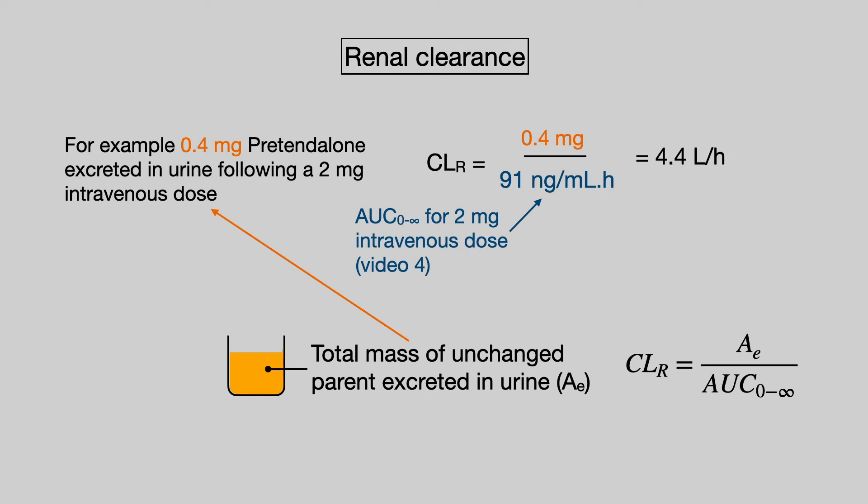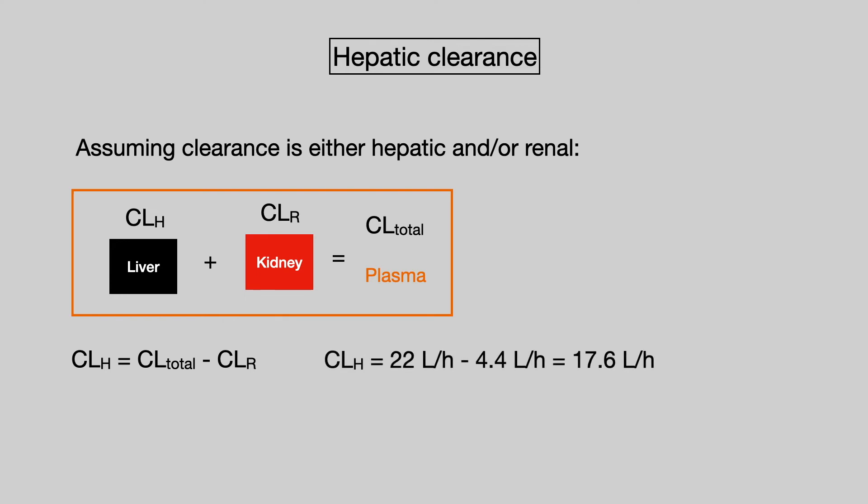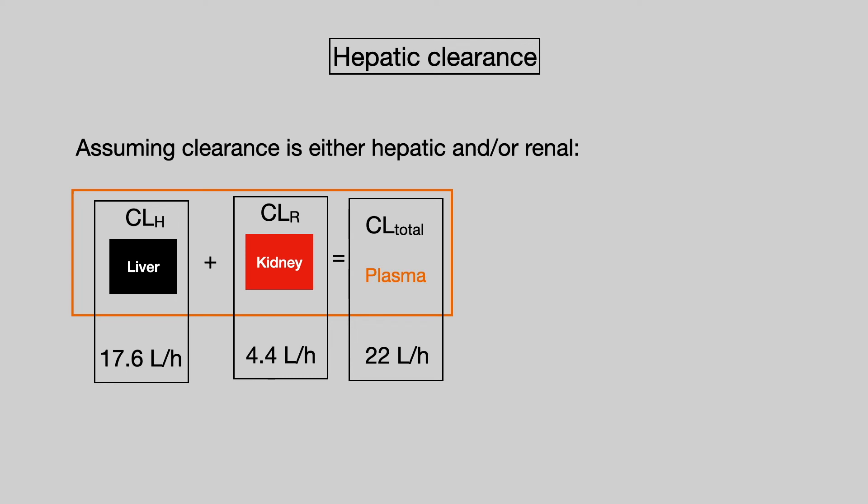We can now calculate hepatic clearance. We assume that clearance is either hepatic or renal. The sum of hepatic and renal clearance gives you the total clearance in plasma. Therefore, hepatic clearance equals the total clearance minus the renal clearance, which comes out at 17.6 litres per hour. We can now divide up clearance between the liver, the kidneys, and the total.